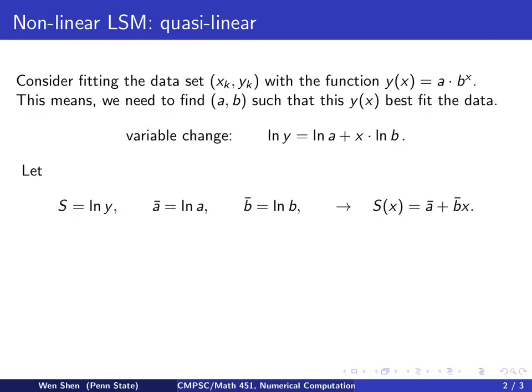Now we see if we call the first term here to be my S and we call the ln of a to be my ā and the ln of b to be my b̄, then the function S depends on ā and b̄ in a linear way. We see that we would have a linear regression.